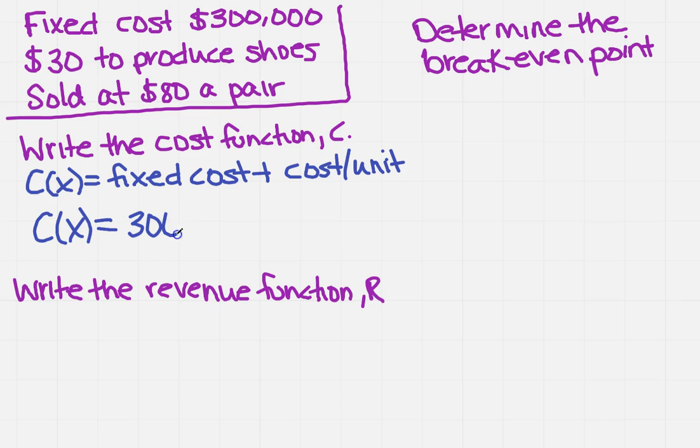So my C of X: what is the fixed cost? Well, the fixed cost is three hundred thousand. And what is the cost per unit? Well, it costs thirty dollars to produce a pair of shoes, so it's going to be thirty dollars for every X, each pair of shoes.